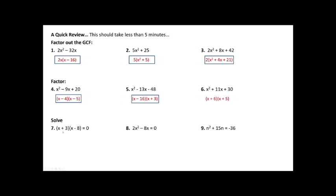In the last section, if I have something already in factored form equal to zero, the zero product property says one of two things must be true: either x plus 3 must equal zero, because zero times anything equals zero, or x minus 8 must equal zero. I solve these two equations separately: x is either negative 3 or positive 8.